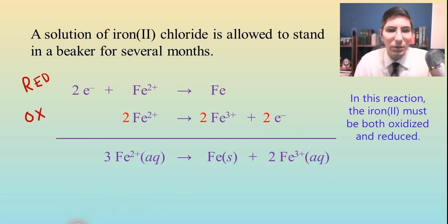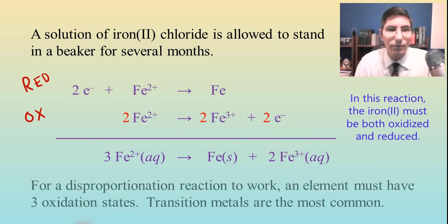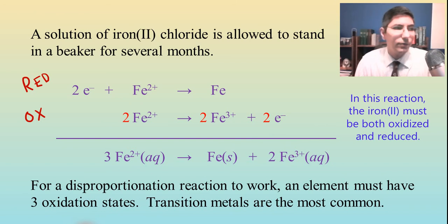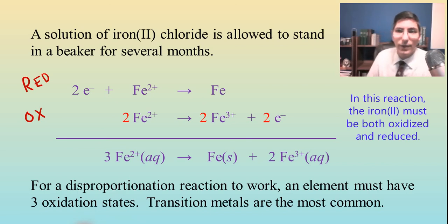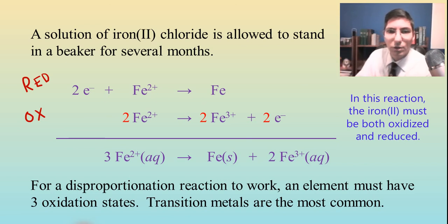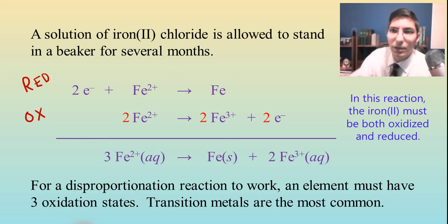For a disproportionation reaction to work, it works best when you have three oxidation states available - the elemental version and two ionic states in the transition metal. Tin is common with plus two and plus four; copper is common with plus one and plus two.